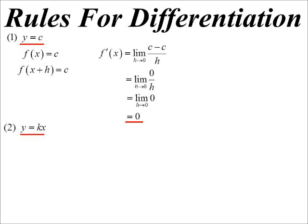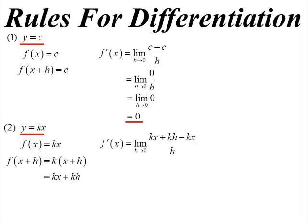What if it's a linear function? Again we should know the answer, because for a linear function we know the slope would be the coefficient of x, so we're expecting k. So f(x) = kx, and f(x+h) = kx + kh. Subbing into our first principles formula, the kx cancels, we have kh over h, the h's cancel, and we get the constant k. Whenever we differentiate a linear function, we know it's just going to be the coefficient of x.